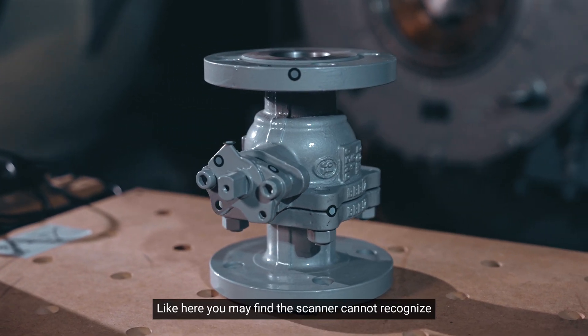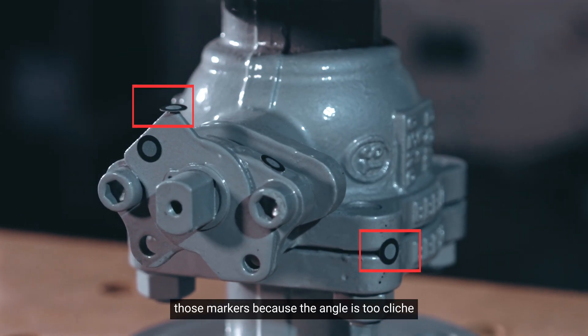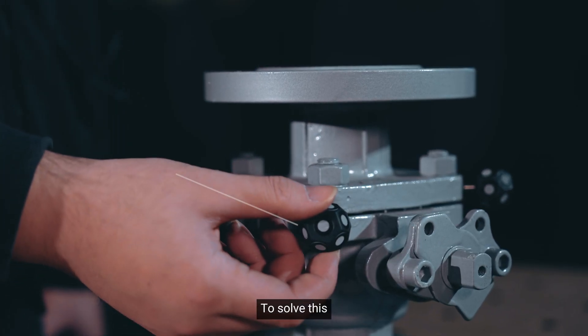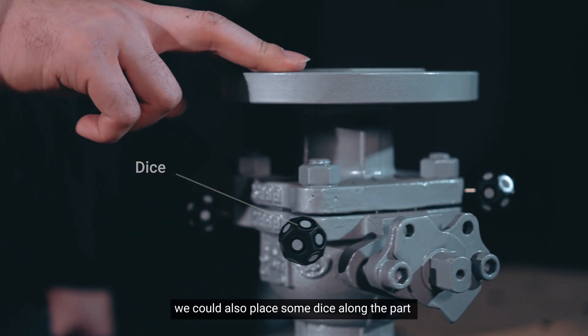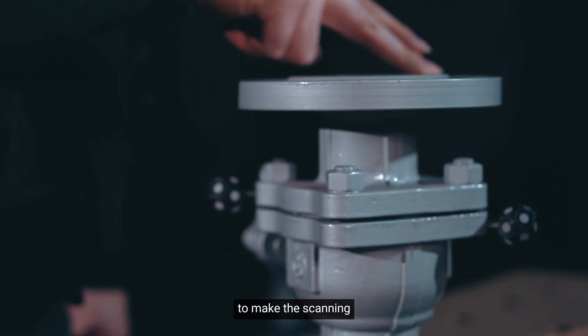Like here, you will find the scanner cannot recognize those markers because the angle is too oblique. To solve this, we could also place some dice along the part to make the scanning for alignment.